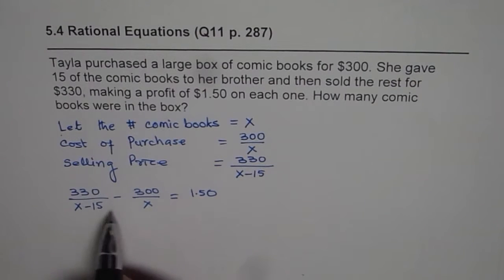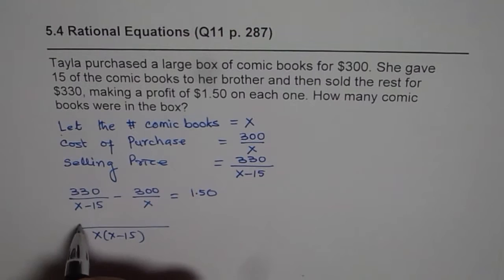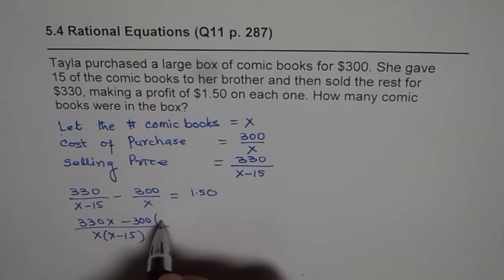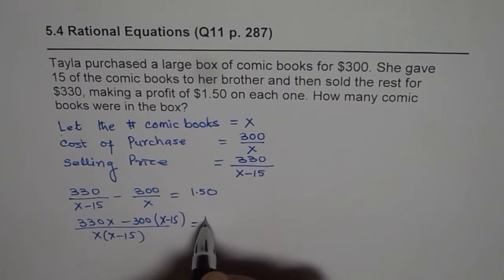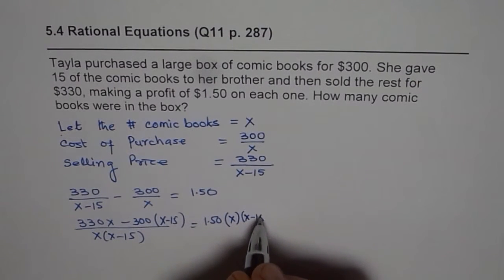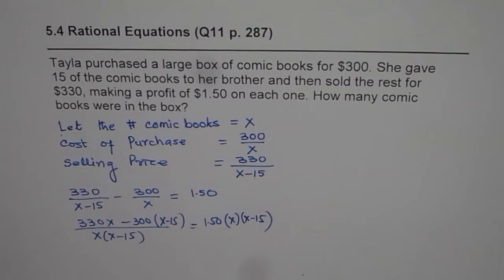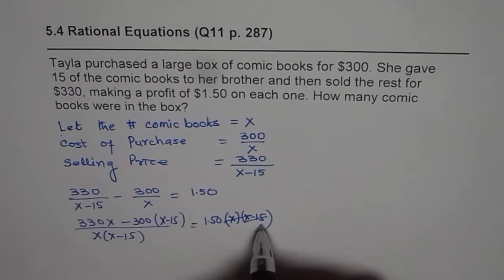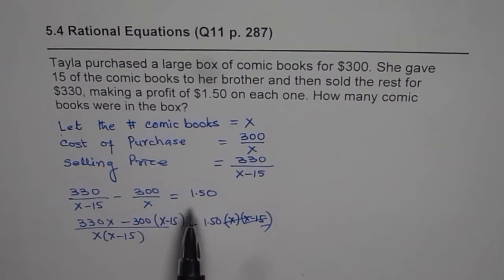So that gives you your equation. Now you need to solve it, taking common denominators, simplifying by cross multiplying. So let's do that. First step, common denominator, x times x minus 15. 330 gets multiplied by x and 300 gets multiplied by x minus 15. On the other hand, 1.50 gets multiplied by both of them, x times x minus 15. So we are taking common denominator on the left side and then keeping it like this. We'll multiply in the next step.